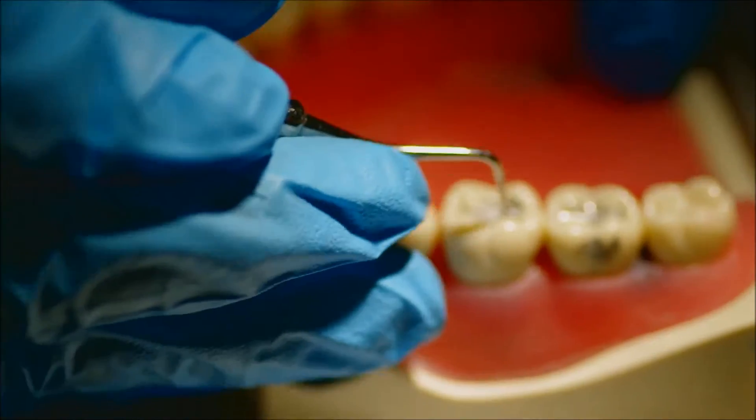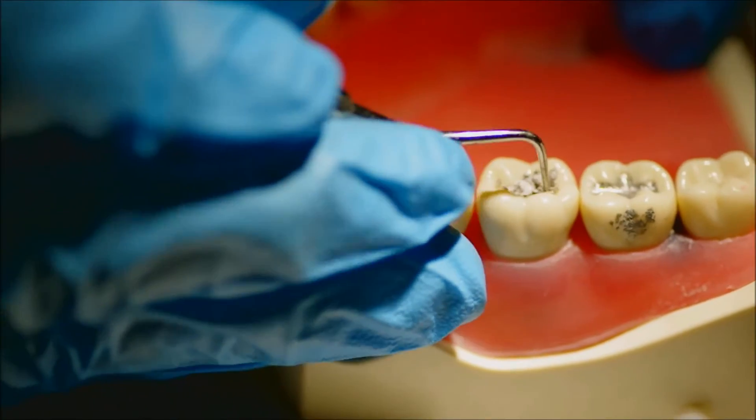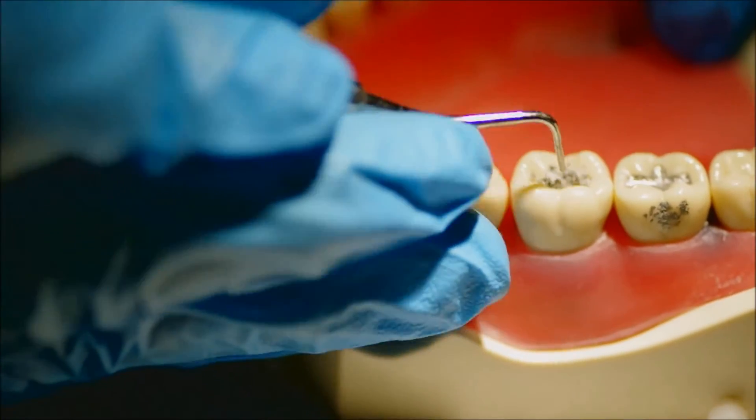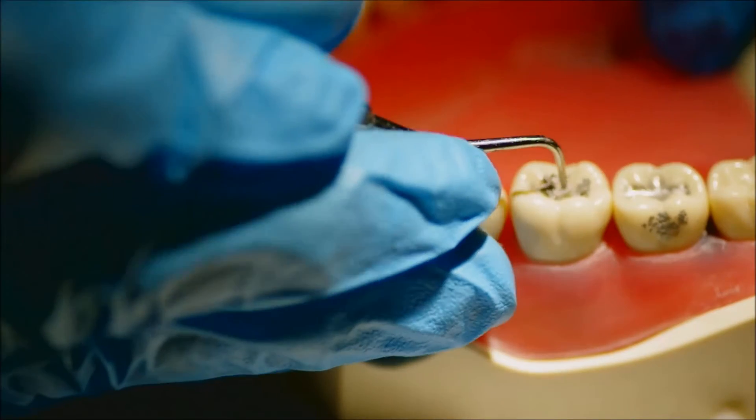In order to do the amalgam restoration for a class 1, you're going to take your amalgam pellet to the amalgamator for 10 seconds and gather the amalgam in the well.